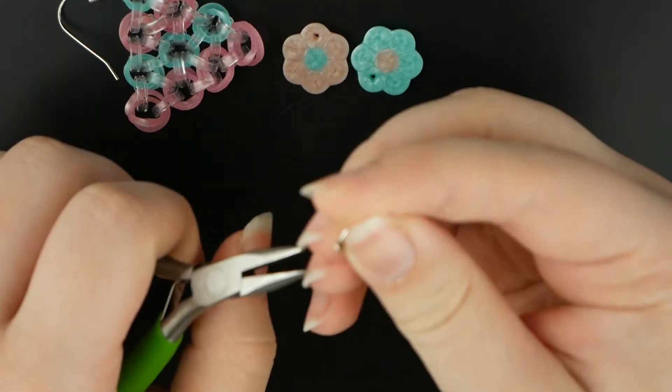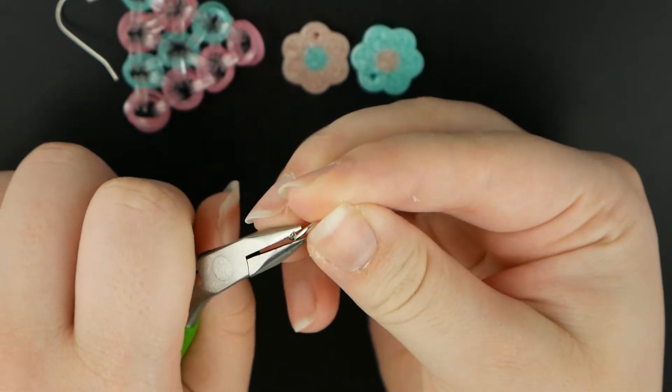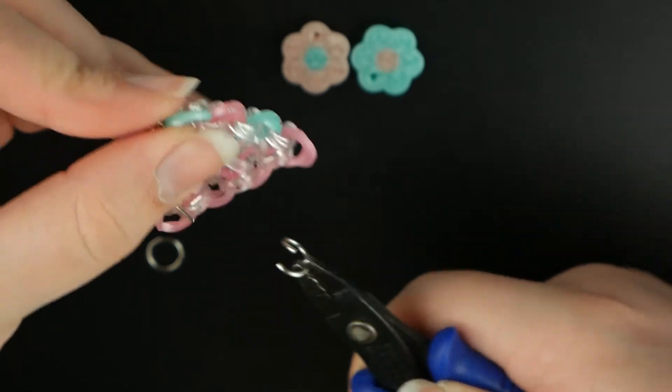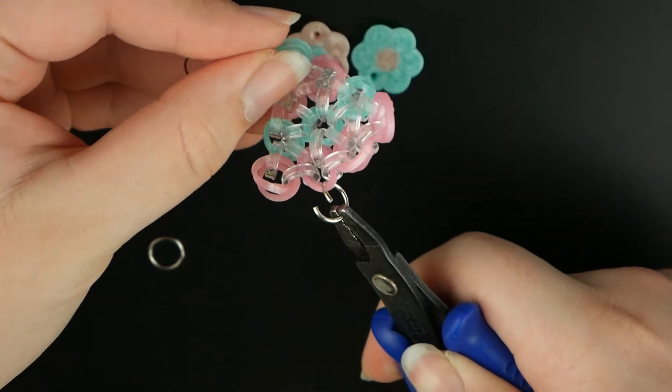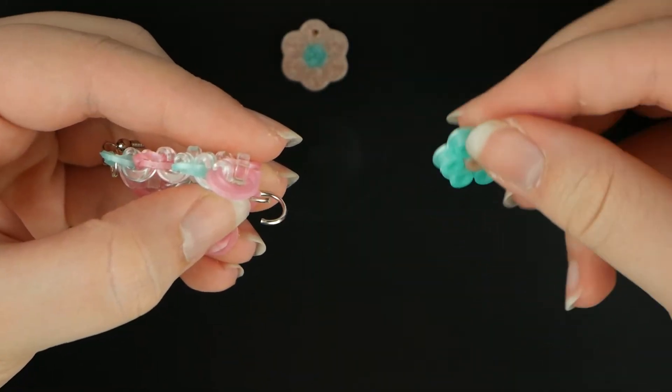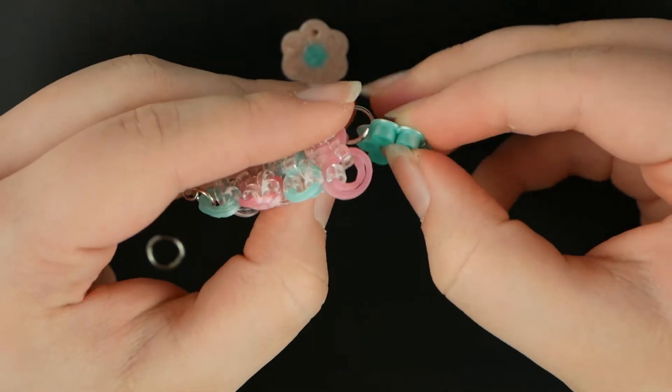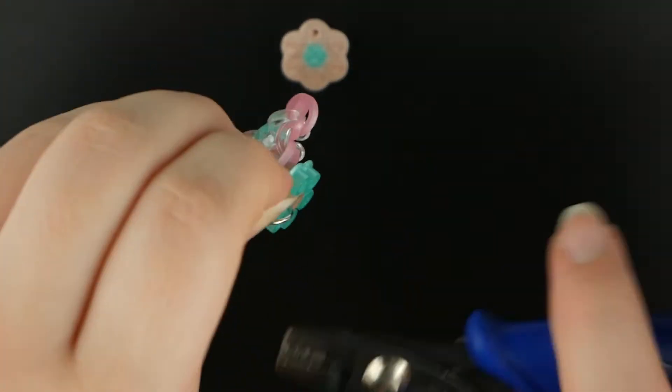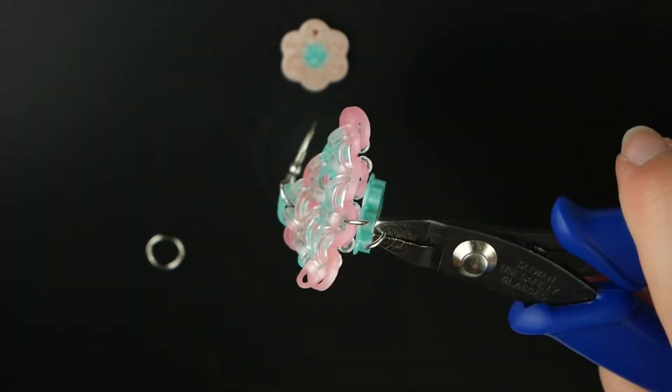Now we're going to take our jump rings. You're going to take your jump ring and open it up, and then put it through one of the bottom loops of your earring. Then take your little Perler bead flower and put it on the jump ring, and then close up that jump ring.